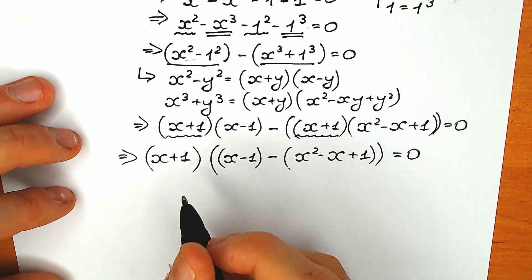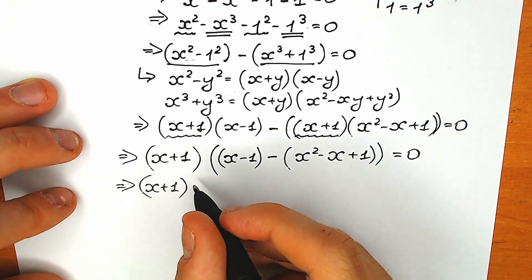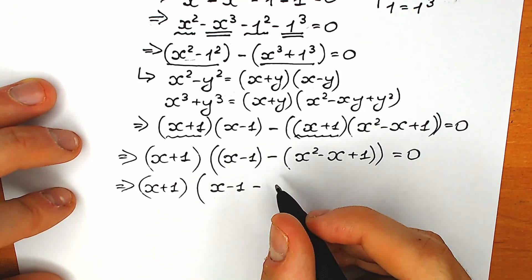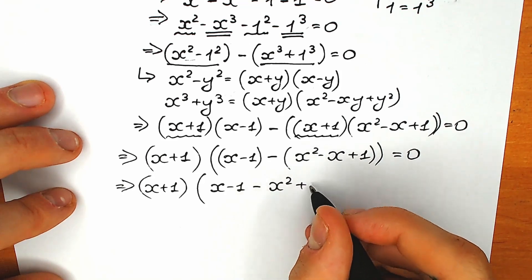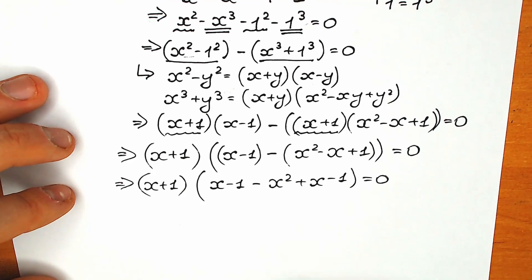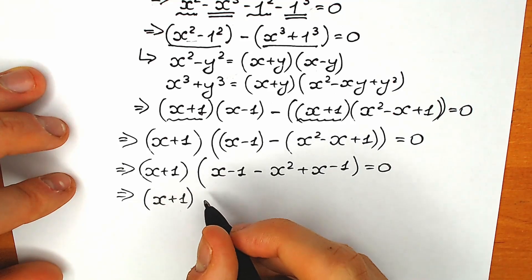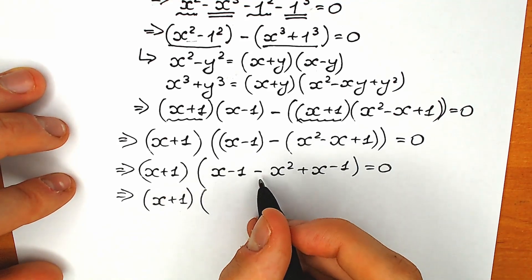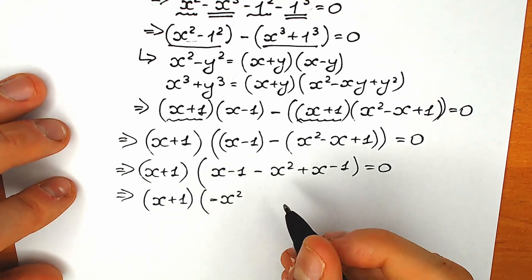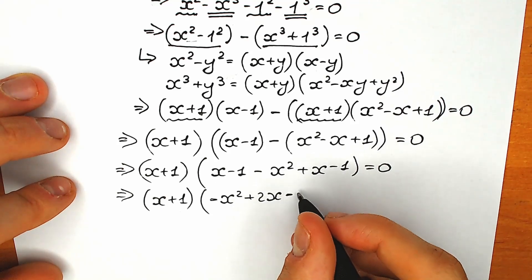Let's simplify the expression inside the second parenthesis. We have x minus 1 minus x squared plus x minus 1, and when we change all the signs from the distributed negative we get: minus x squared plus 2x minus 2. So our factored form is (x plus 1)(minus x squared plus 2x minus 2) equals 0.